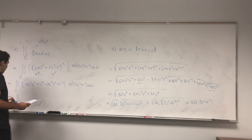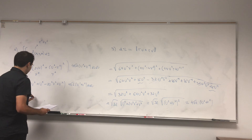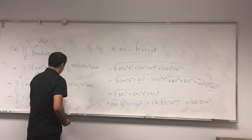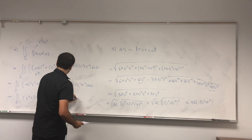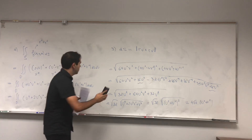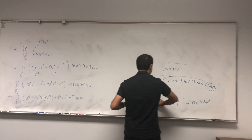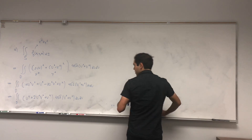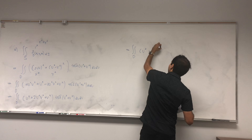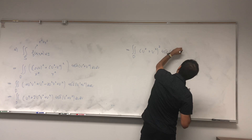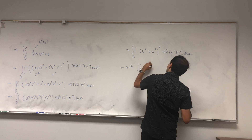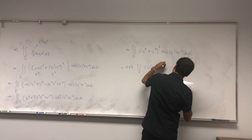Expanding: 4U²V² + U⁴ − 4U²V² + V⁴ = U⁴ + V⁴, but with the cross term check giving U⁴ + 2U²V² + V⁴ = (U²+V²)². So the integral becomes ∬_D (U²+V²)² · 4√2 · (U²+V²) dU dV = 4√2 ∬_D (U²+V²)³ dU dV.